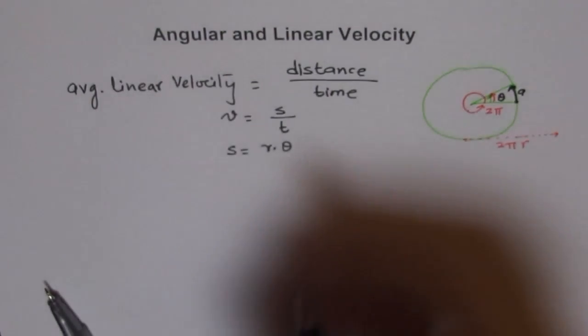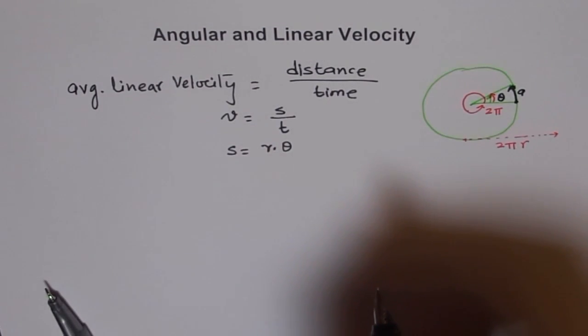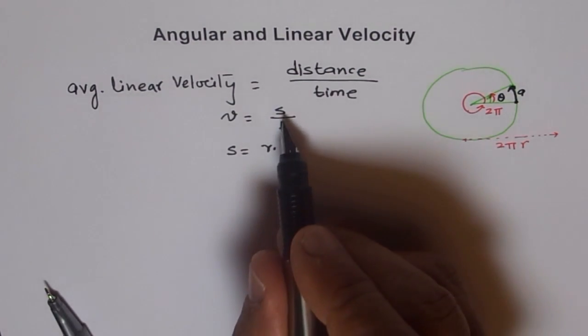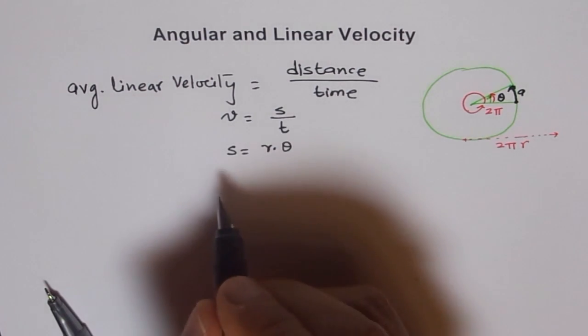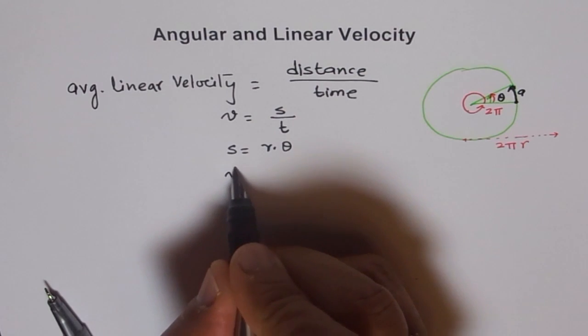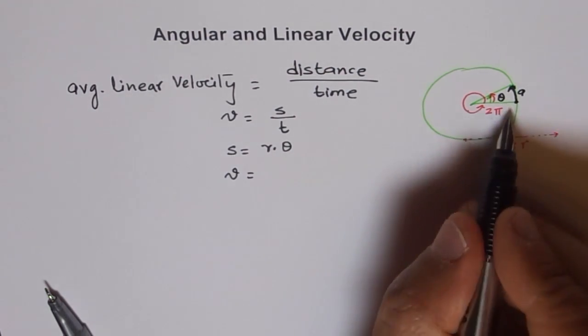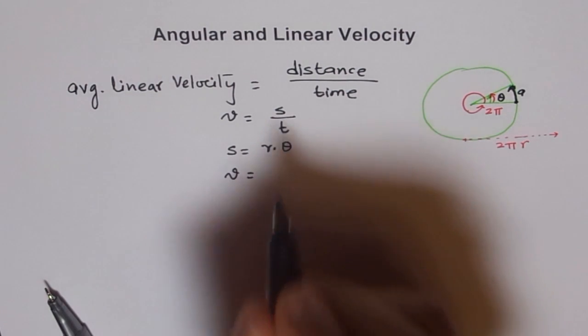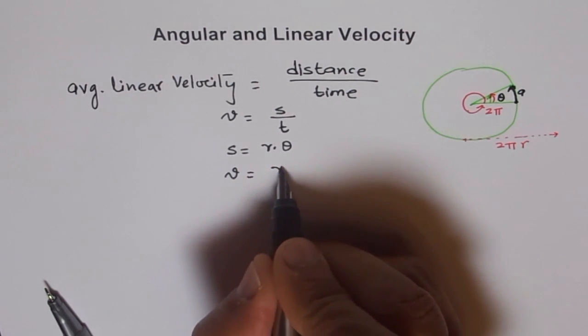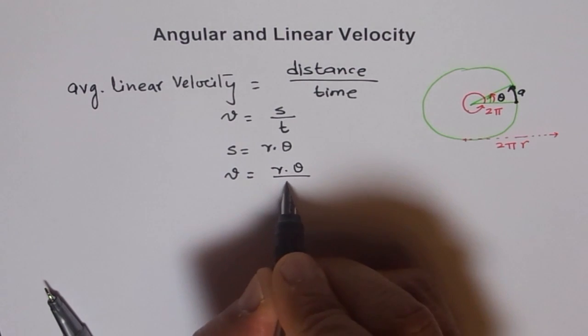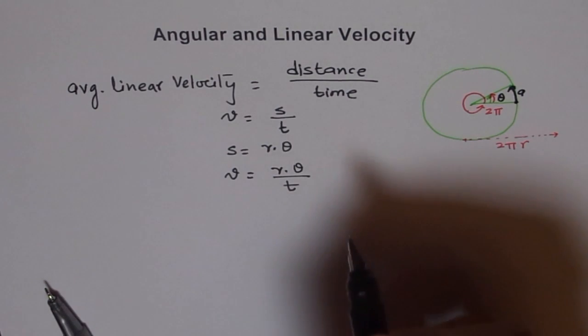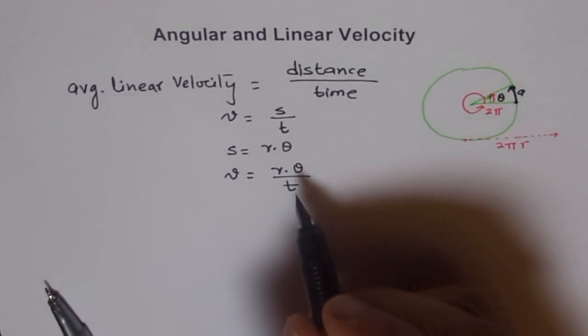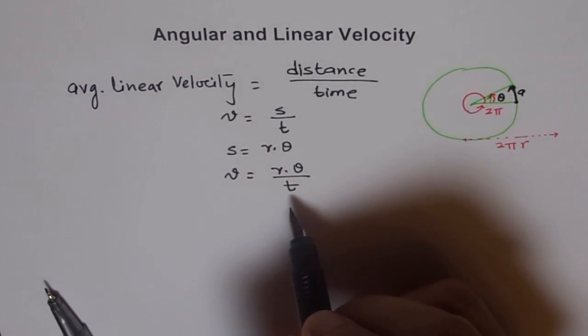Now, if s equals r times θ, then we can replace this s with r times θ and get our velocity. So we get velocity equals to, I am replacing this distance s in the first equation and I get r times θ over t. Theta over t, θ is the angle and t is the time taken.